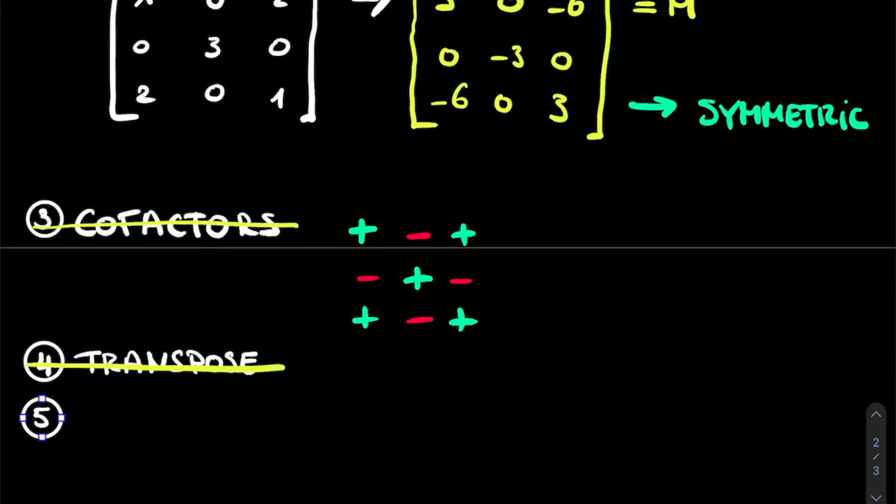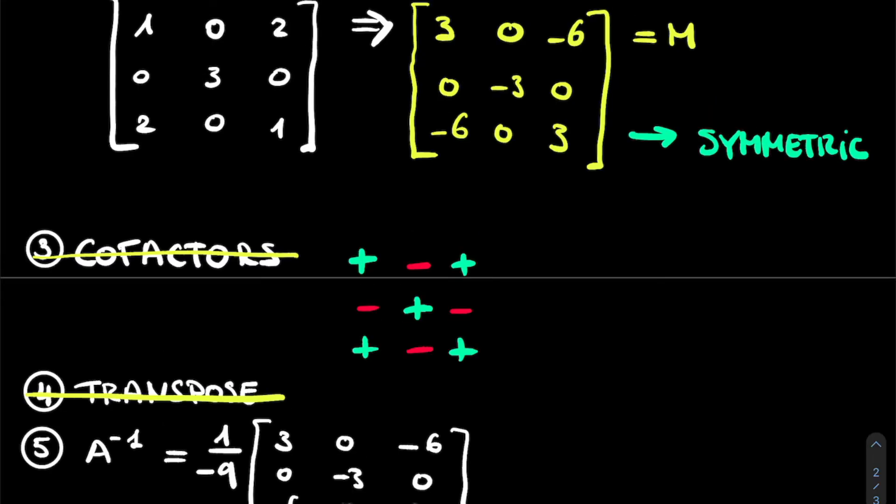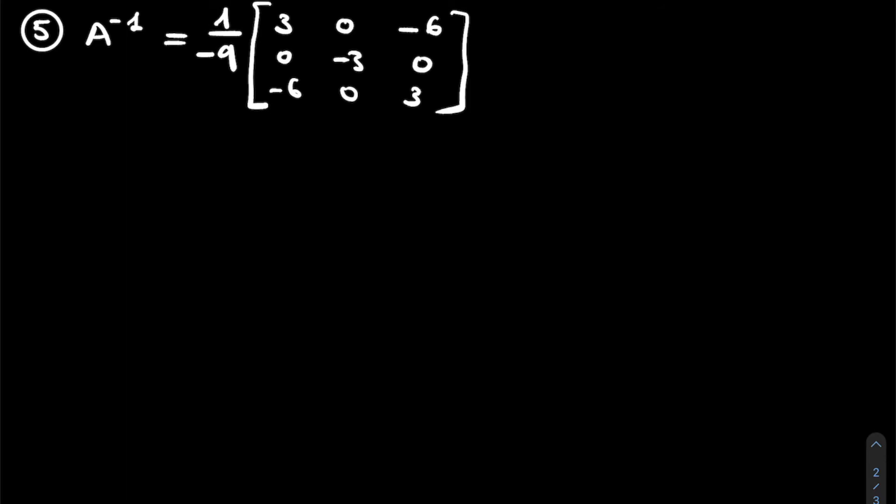Now, the fifth step is bringing this all together. We know that A to the power of minus 1, so the inverse of our matrix, is simply 1 over our determinant, which we calculated to be minus 9, multiplied by this matrix that we have: 3, 0, minus 6, 0, minus 3, 0, minus 6, 0, and 3. We can still rewrite this a little bit by bringing a minus 3 outside of this matrix. So we get 1 divided by 3, because this minus 9 gets cancelled with a minus 3. And then we simply divide each element in our matrix with minus 3. So we get minus 1, 0, 2, 0, 1, 0, 2, 0, and minus 1.